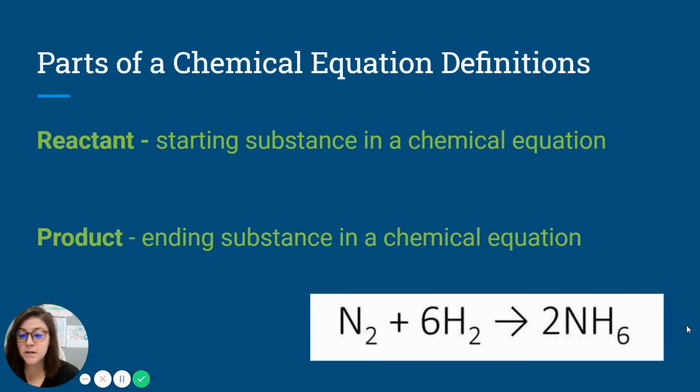So super simple today and super simple tomorrow when you practice and you show that you got it to understand what a chemical equation is. You just need to remember those three parts: reactants, the arrow, and the products, and then you're good.